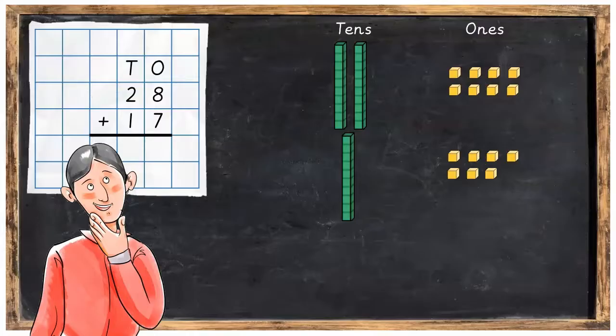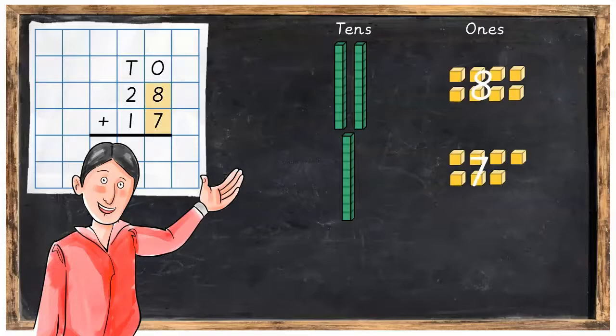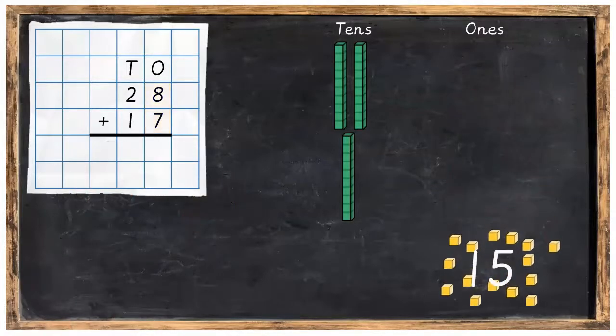Okay, what are we going to do next? Well, with any addition sum we always have to start with the ones, which are on the right-hand side. So here we've got our 8 plus 7. Now bring those down to the bottom: 8 plus 7 is equal to 15.